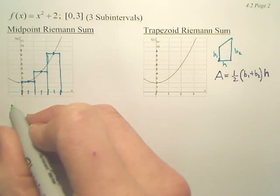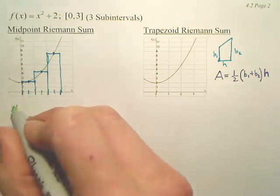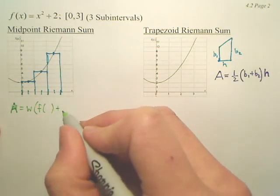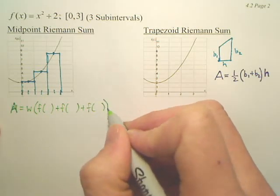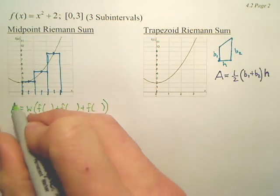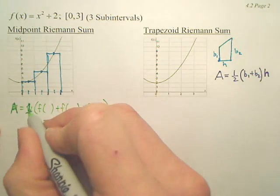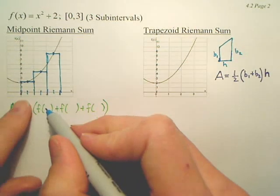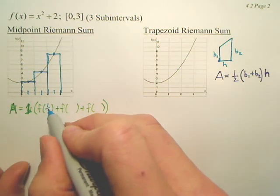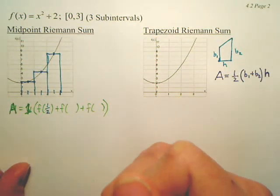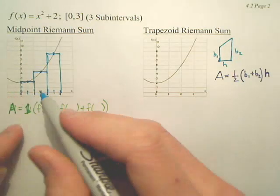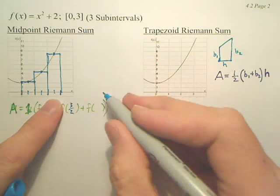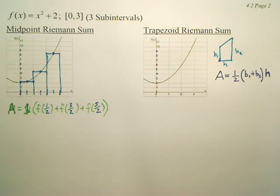The formula for the area under the curve is equal to width times f of something plus f of something plus f of something. What is the width? Well, our width is 1, so can I replace that w with a 1? Now, f of what? What did we plug in to get the height of that first rectangle? 1 half. If your rectangle is too wide, the middle would be 1. But in this situation, the middle is 1 half. What's the middle of the second rectangle? 3 over 2. And the middle of the next one is 5 over 2.